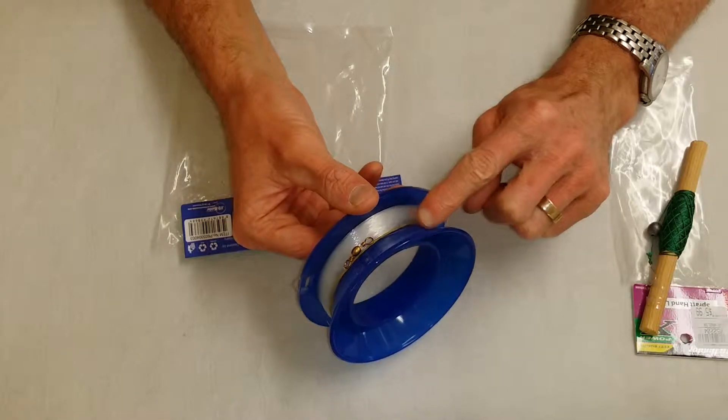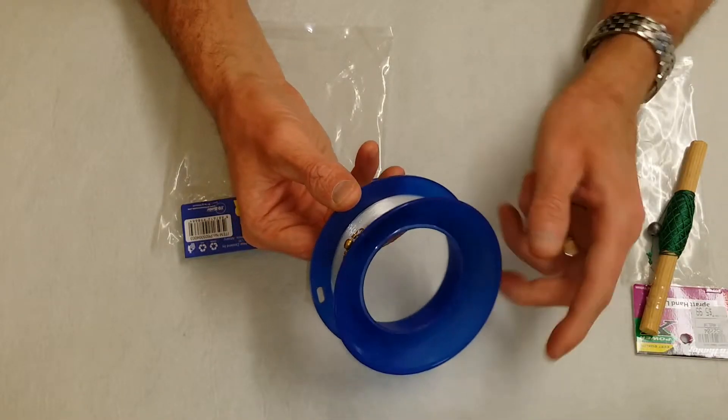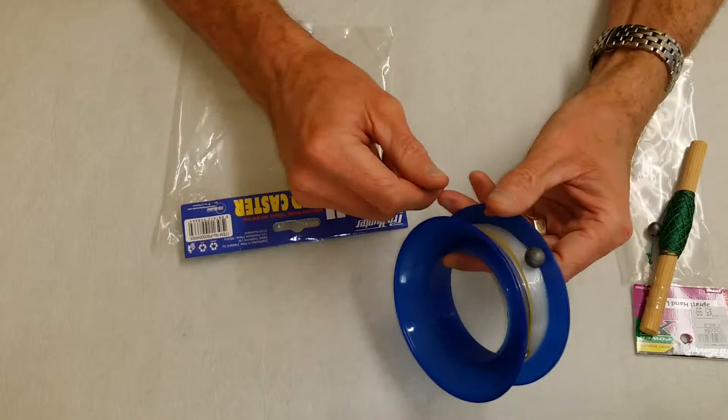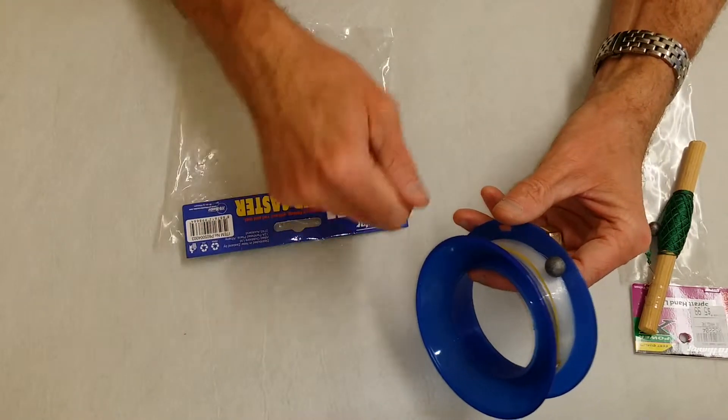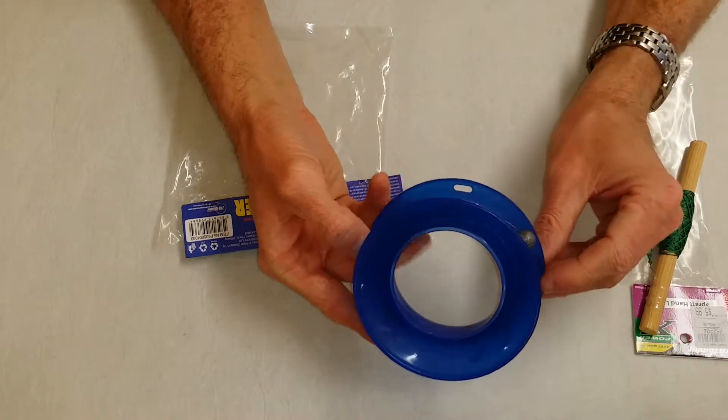So while you're holding it, swinging the sinker around in the air, and you throw it, off the line goes. So it allows the child to get a little bit more distance off the shore when they're fishing or on the rocks.